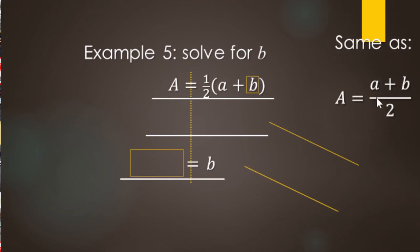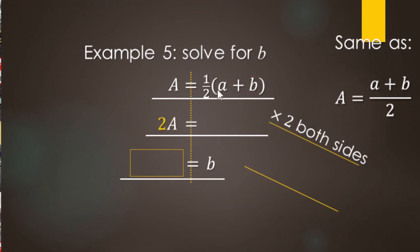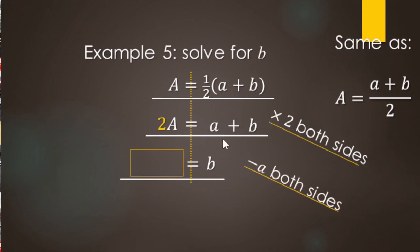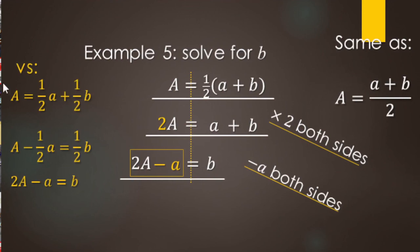We can undo the divide by 2 by multiplying both sides by 2. A times 2 makes 2A, and the right side becomes A plus B, because 2 times one-half equals 1. Now we still need to get B by itself, so we subtract little a from both sides. 2A minus little a leaves 2A minus a on the left, and just B on the right.